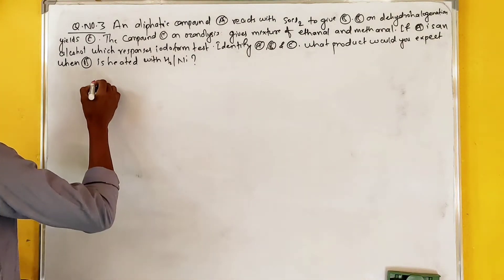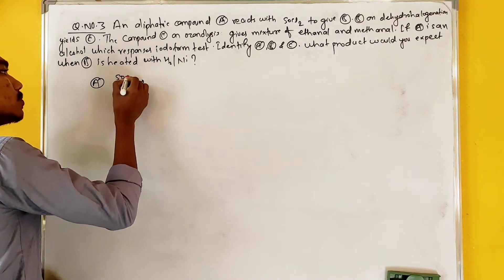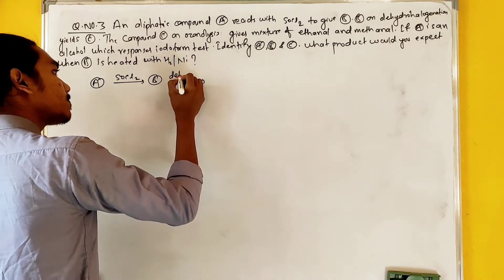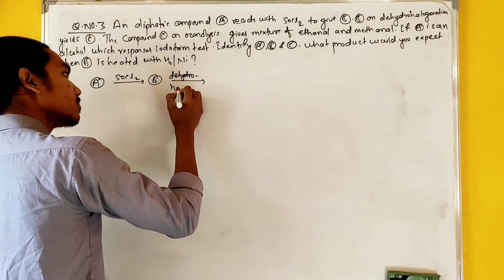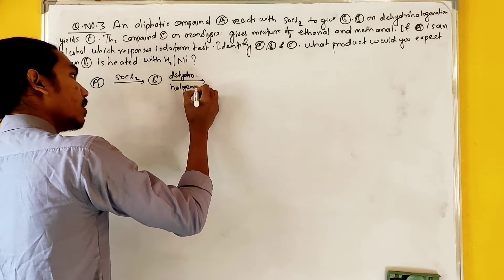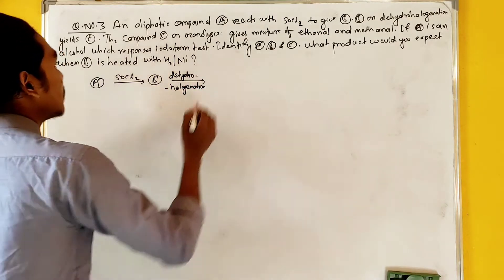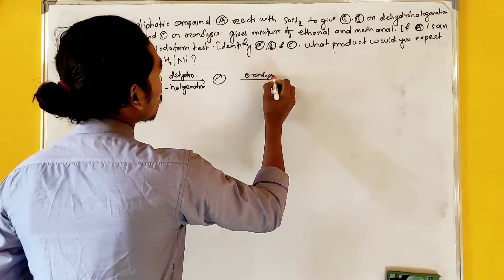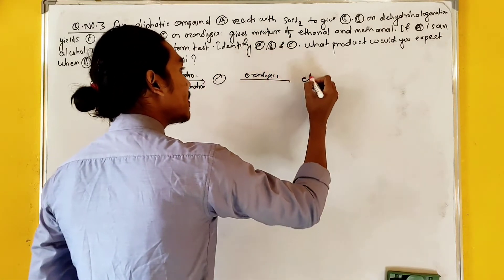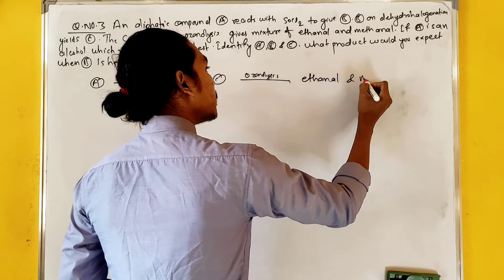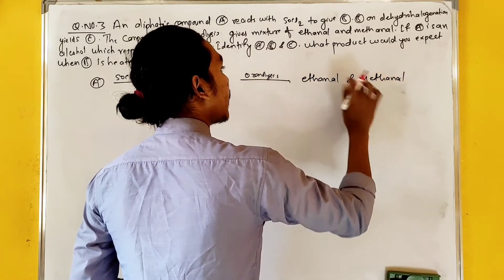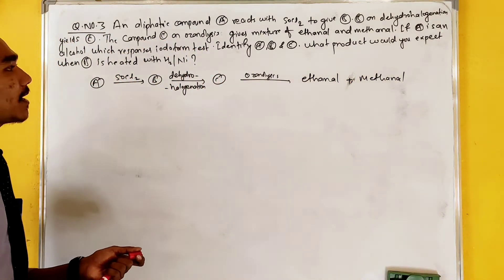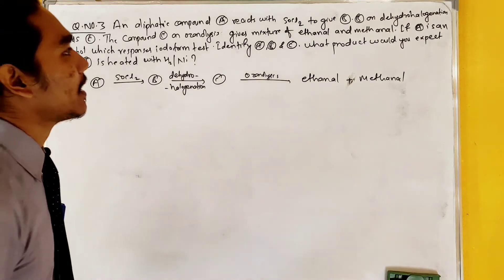An LFT compound A reacts with SOCl2. That gives compound B. B on dehydrohalogenation gives C. C compound on ozonolysis gives a mixture of ethanal and methanal. If A is an alcohol with a positive iodoform test, then identify A, B, and C.